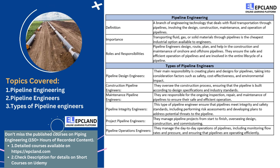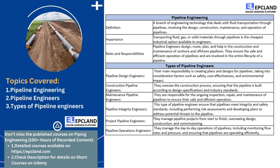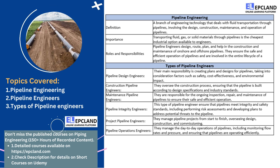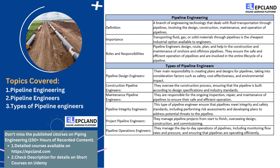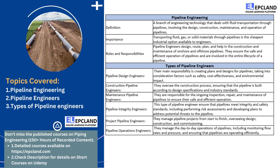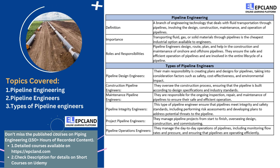After the pipeline is operational, pipeline engineers continue to monitor its performance and conduct regular inspections to ensure its integrity. They also develop and implement maintenance and repair strategies to address any issues that arise, such as leaks or corrosion. Pipeline engineering is a critical aspect of modern infrastructure, as pipelines are used to transport essential resources such as oil, gas, water, and sewage. Pipeline engineers play a vital role in ensuring that these resources are transported safely and efficiently, and that they are protected from environmental and other risks.